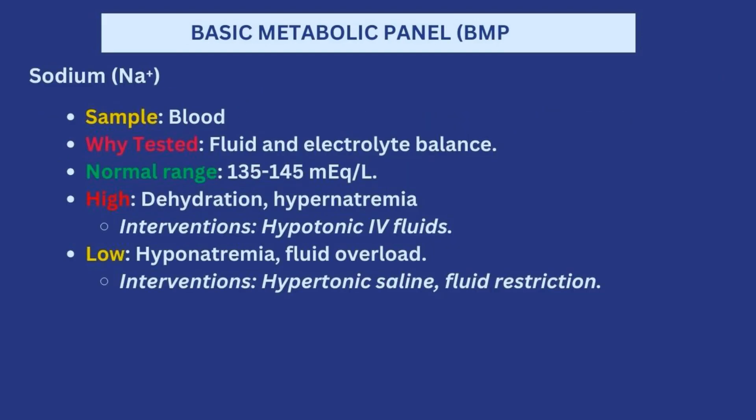Let's talk about each of the electrolytes and values looked at in the BMP test. First, we'll talk about sodium levels, which are tested because of fluid and electrolyte balance. Normally sodium should be between 135 to 145. If it is high, that means the patient is dehydrated and has hypernatremia. In that situation you will be expecting to give some hypotonic IV fluids.